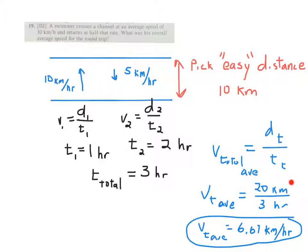So the total distance is 20 kilometers, 10 plus 10 is 20. Total time is three hours, gives you an average of 6.67 kilometers per hour, a number closer to the slower speed because you spent more time going the slower speed.